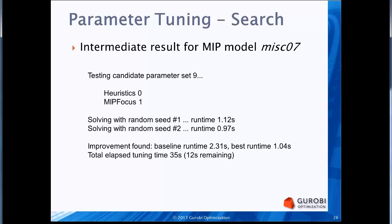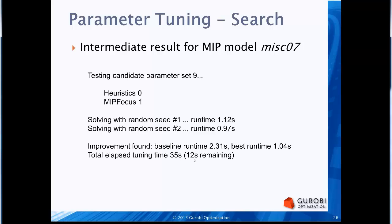Once the baseline run is done, the next step is the search. Shown here is a single parameter set for model MISC07 — parameter set number 9. It sets the heuristics parameter to 0 and the MIP focus parameter to 1. It does two runs for the two random number seeds, producing runtimes of 1.12 and 0.97 seconds. The base runtime for MISC07 was 2.31 seconds, and the best runtime found so far is 1.04 seconds — more than a factor of 2 improvement. It also shows total elapsed and remaining tuning time.